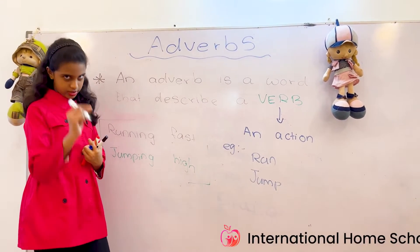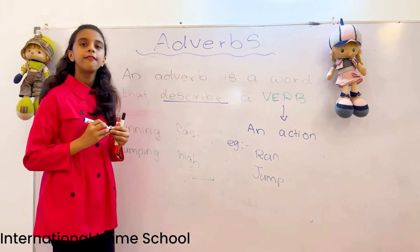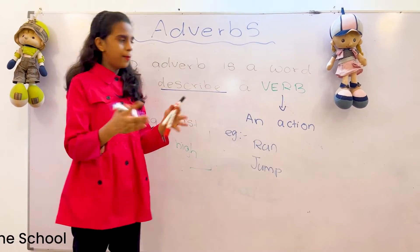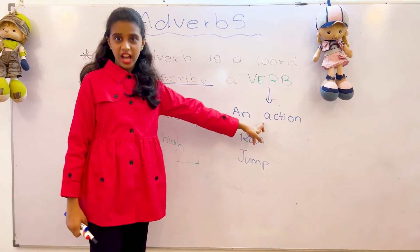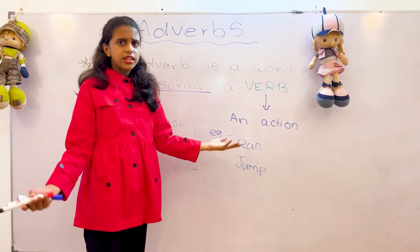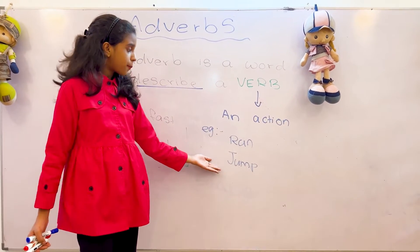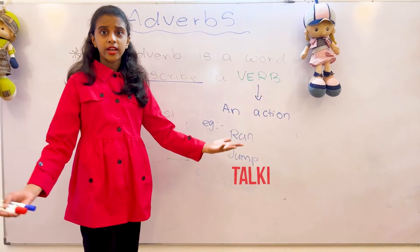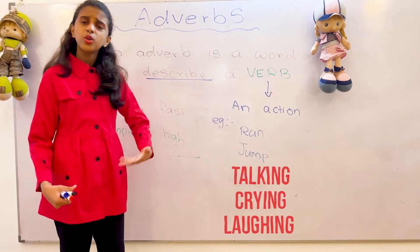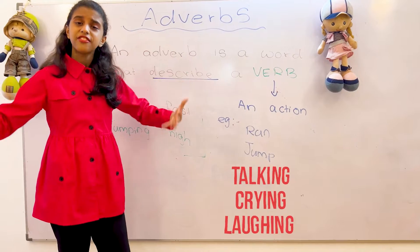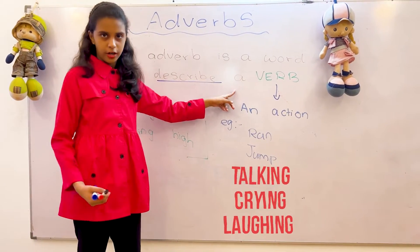An adverb is a word that describes a verb. What is a verb? A verb is an action. Give me some examples: running, jumping, talking, crying, laughing — whatever action you do is called a verb.